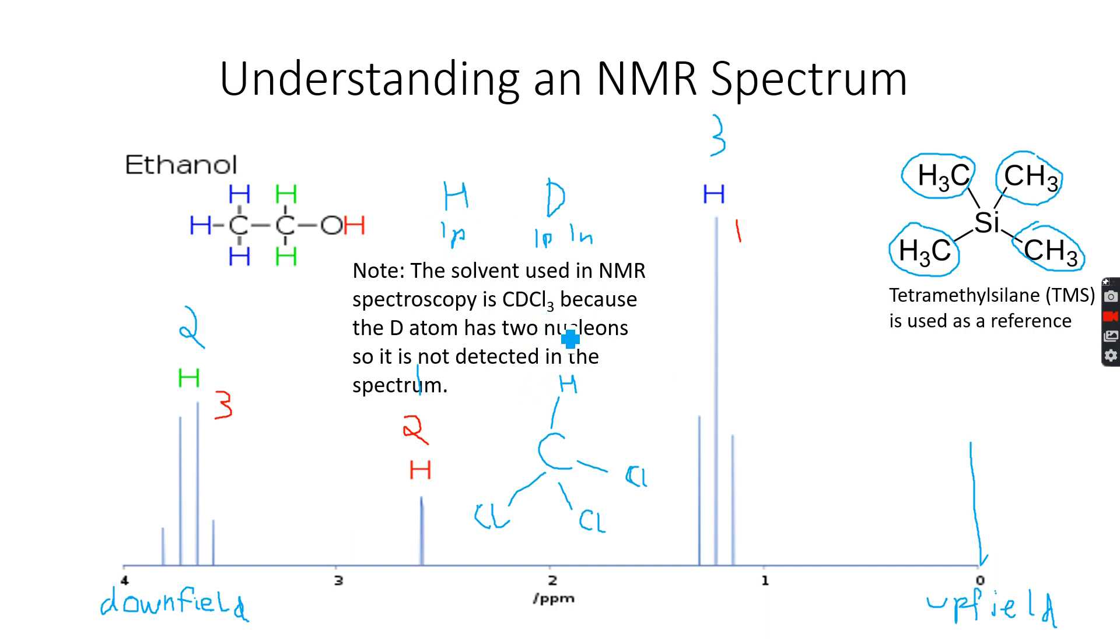So we use CdCl3 as a solvent because we don't want the solvent to have a peak in the NMR spectrum. Because that just defeats our purpose. If we use trichloromethane for example, then we have a hydrogen atom over here, this hydrogen atom.